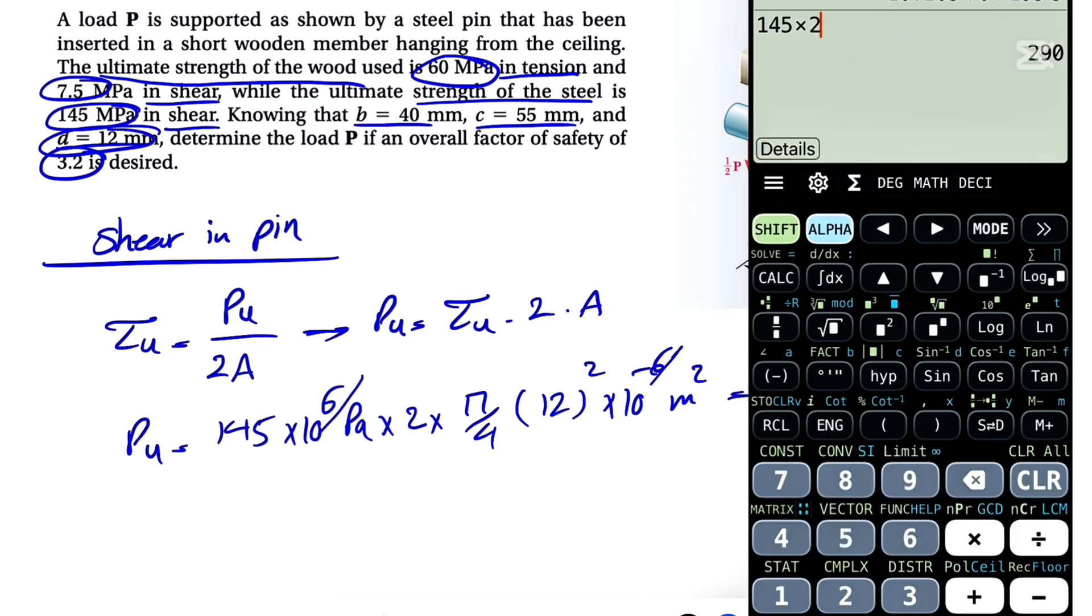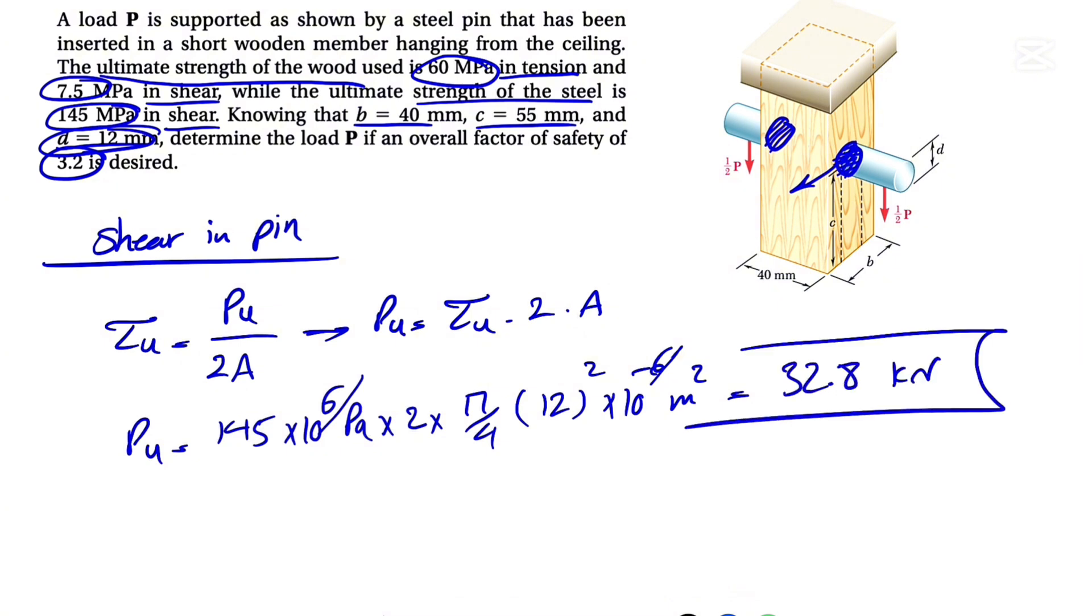So these will be cancelled out. We're going to have 145 times 2 times pi times 12 squared, or 144, divided by 4. That's going to be 32,798 newtons, or 32.8 kilonewtons. That's our first ultimate force P based on the shear in the pin.